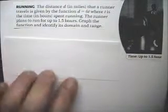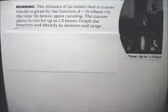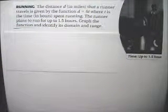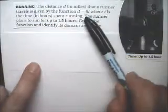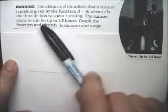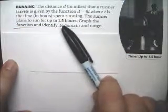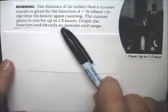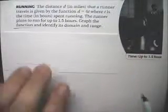Example 6 has a story problem talking about a runner. It says the distance that the runner runs is equal to 6t, where t is the time in hours. The runner plans to run up to 1.5 hours. Graph the function and identify the domain and the range.